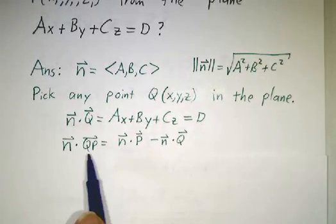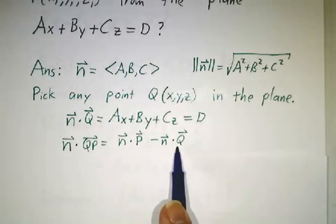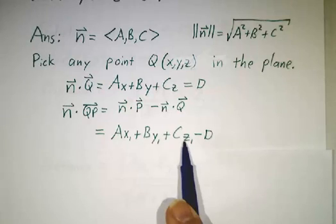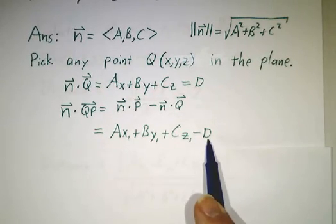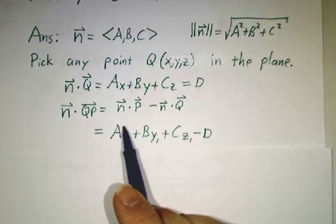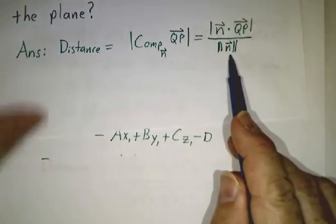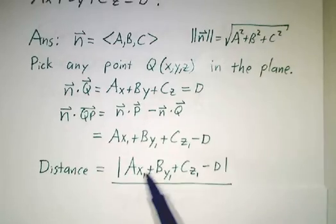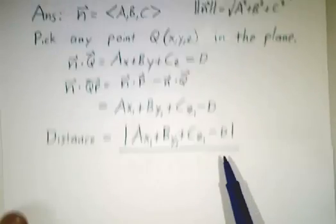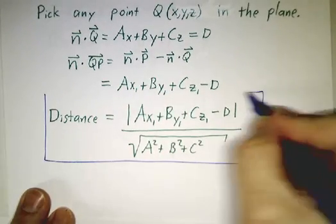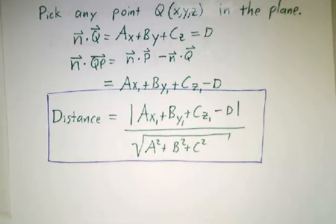n dot QP is just n dot P minus n dot Q. And n dot P is ax₁ + by₁ + cz₁, and n dot Q is d. Our formula was we take n dot QP divided by the length of n. So n dot QP is ax₁ + by₁ + cz₁ minus d, and the length of n is the square root of a² + b² + c². That gives us our formula for the distance between a point and a plane when the plane is described by an equation rather than by a point and a normal vector.